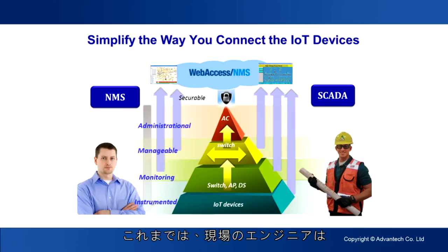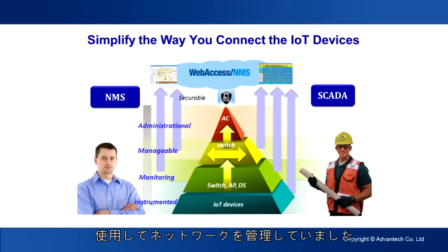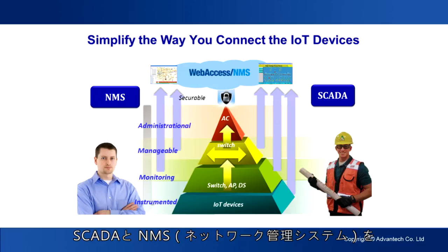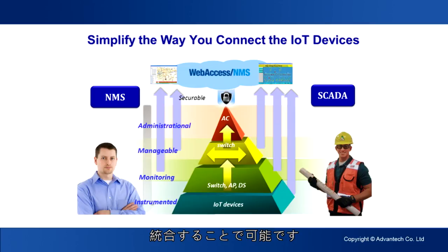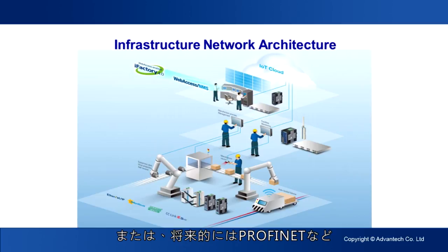It is well known that to achieve Industry 4.0, integration is crucial. In the past, on-site engineers used SCADA for process control and machine control, while IT engineers used NMS for network management — these two were separate. But now, via the networking infrastructure and integration of SCADA and NMS, users can monitor and ensure factory stability from devices to the control center. On-site engineers operate on the production line with industrial switches supporting different industrial protocols such as Modbus, CC-Link, EtherNet/IP, or PROFINET in the future.